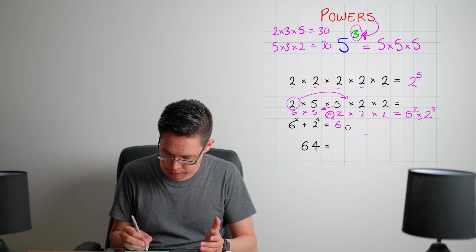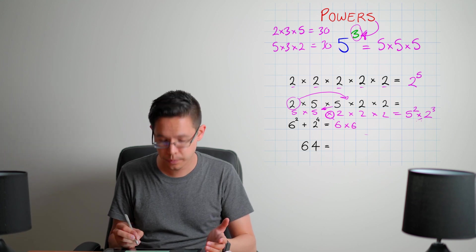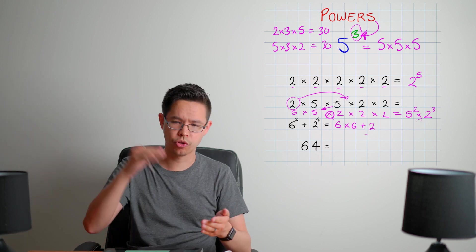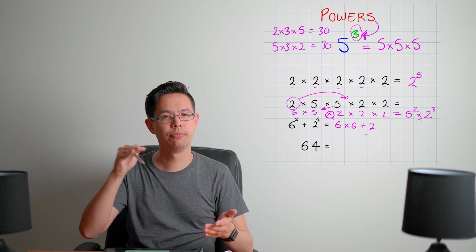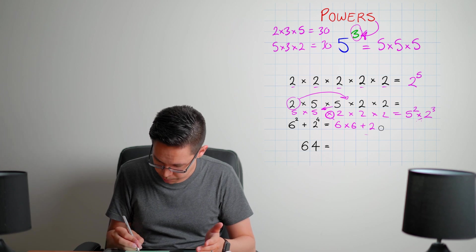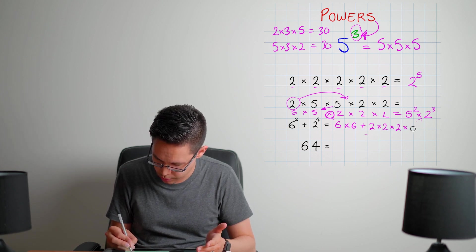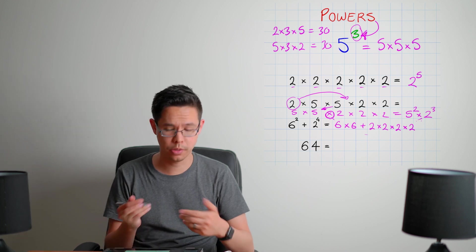So six squared - well, that's basically six times itself twice. Plus the two to the power of four. So two to the power of four, that means that I've got two times itself four times. So there's one, there's two, there's three, there's four. So now we can start doing some maths here.